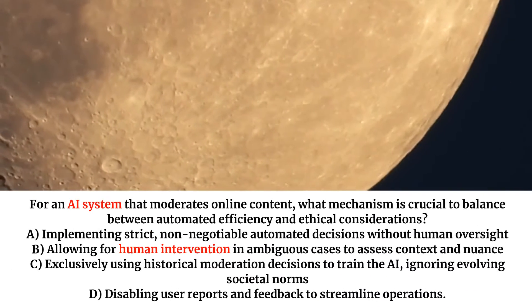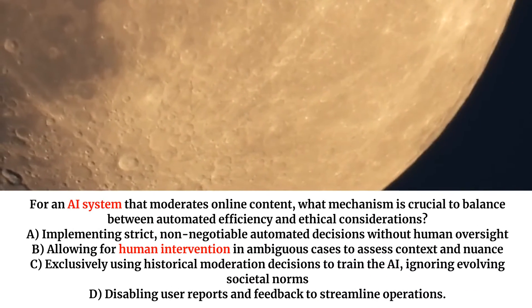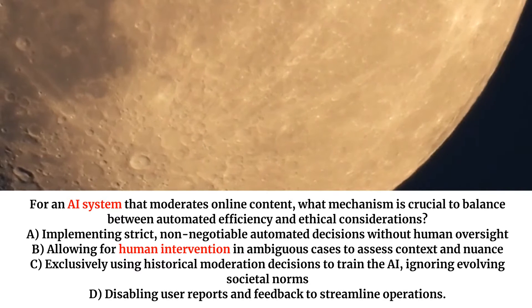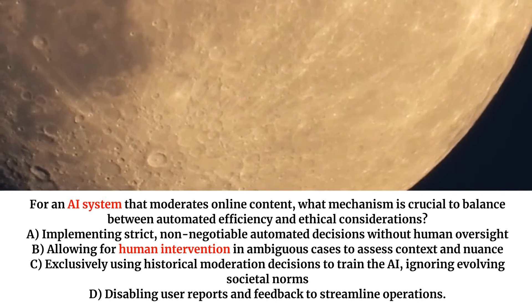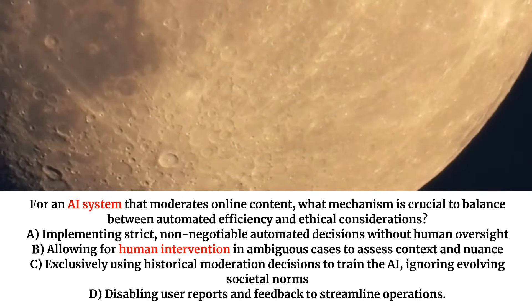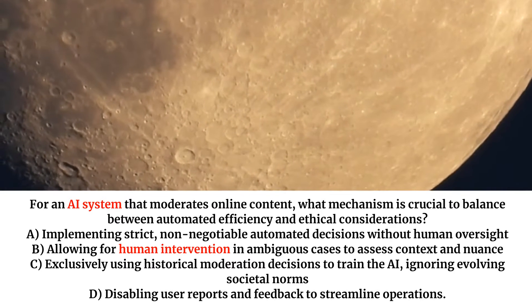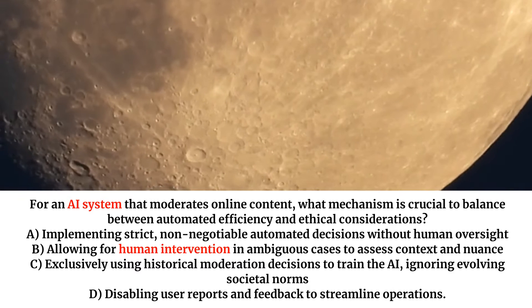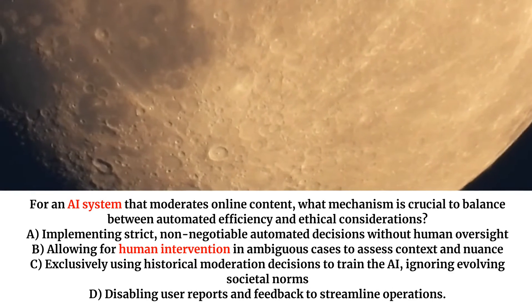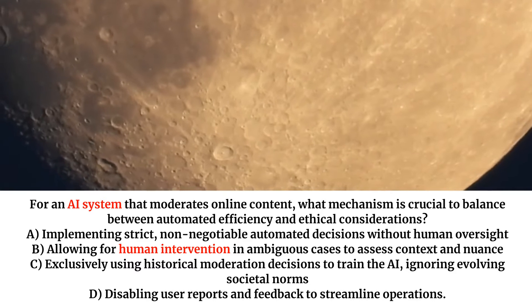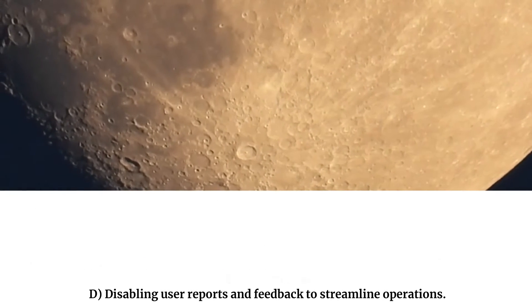For an AI system that moderates online content, what mechanism is crucial to balance between automated efficiency and ethical considerations? A. Implementing strict, non-negotiable automated decisions without human oversight. B. Allowing for human intervention in ambiguous cases to assess context and nuance. C. Exclusively using historical moderation decisions to train the AI, ignoring evolving societal norms. D. Disabling user reports and feedback to streamline operations.